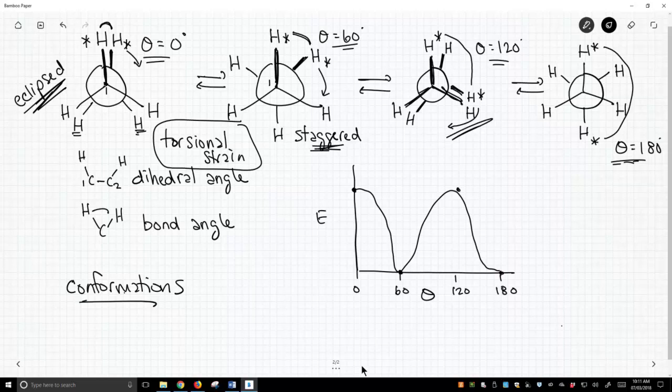But those aren't the only conformations. You could have a dihedral angle of 45, 22.6. There's an infinite number of conformations. But the most stable of all those infinite conformations is going to be these staggered conformations.